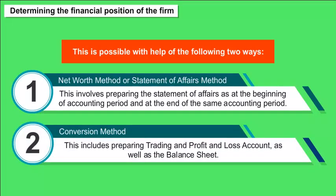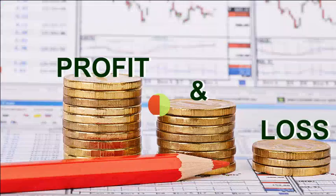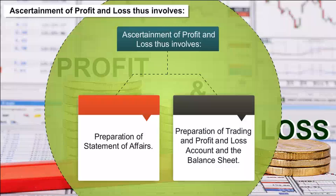(2) The Conversion Method, which includes preparing the trading and profit and loss account as well as the balance sheet. Ascertainment of profit and loss thus involves preparation of a statement of affairs, preparation of a trading and profit and loss account, and the balance sheet.